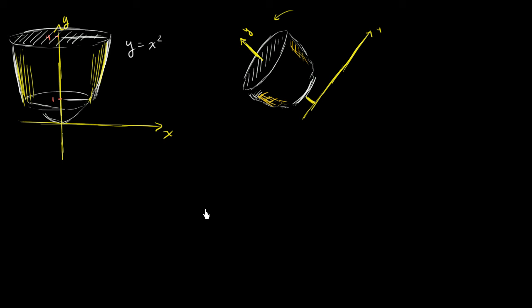We still haven't thought about how to actually find the volume of this. What we can do, instead of creating disks where the depth is in little dx's, is create disks where the depth is in dy's. So let's think about constructing a disk at a certain y value that has the same radius as the shape at that point, with a depth of dy.